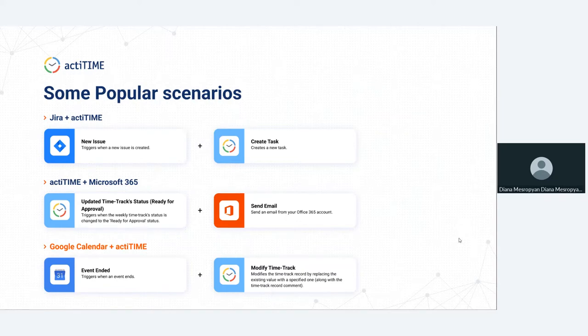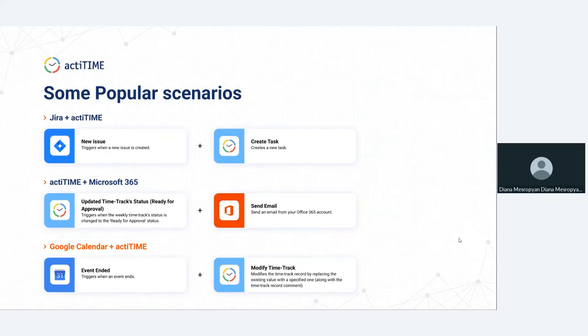The next scenario is an integration between ActiTime and Office 365 — especially interesting for those who use the approval functionality in ActiTime. The trigger is the change of status of a timesheet — the timesheet becomes ready for approval — and the action is an email being sent from your Office 365 account notifying that the timesheet is now ready for approval.